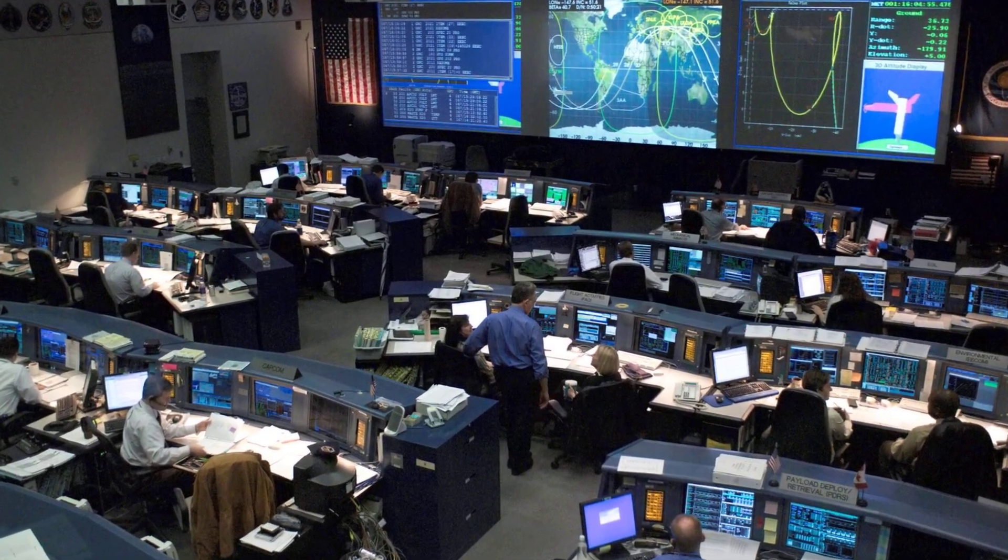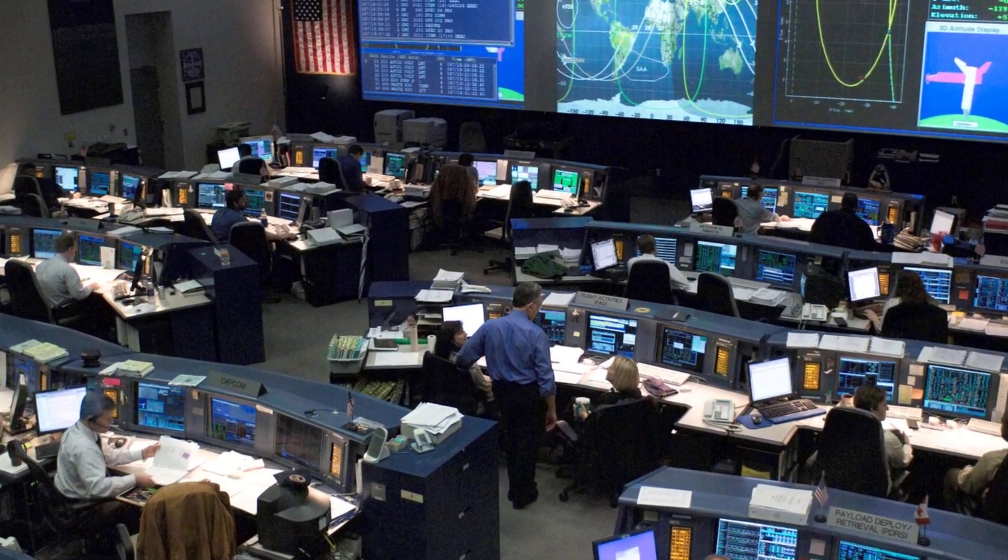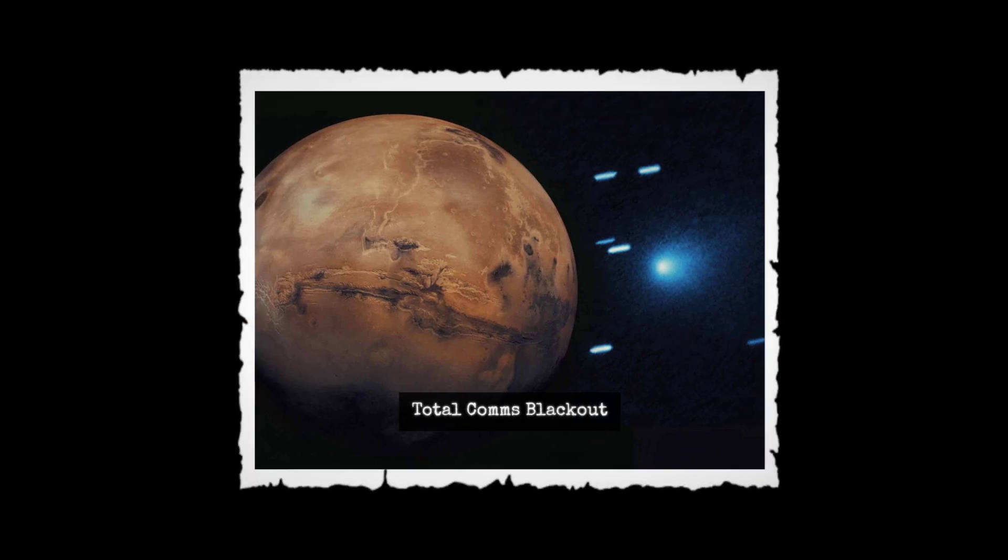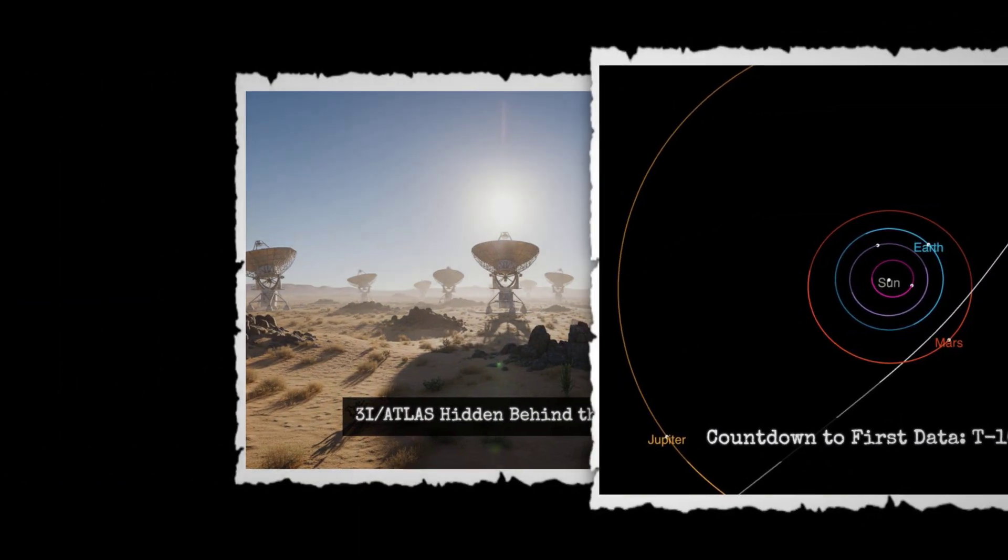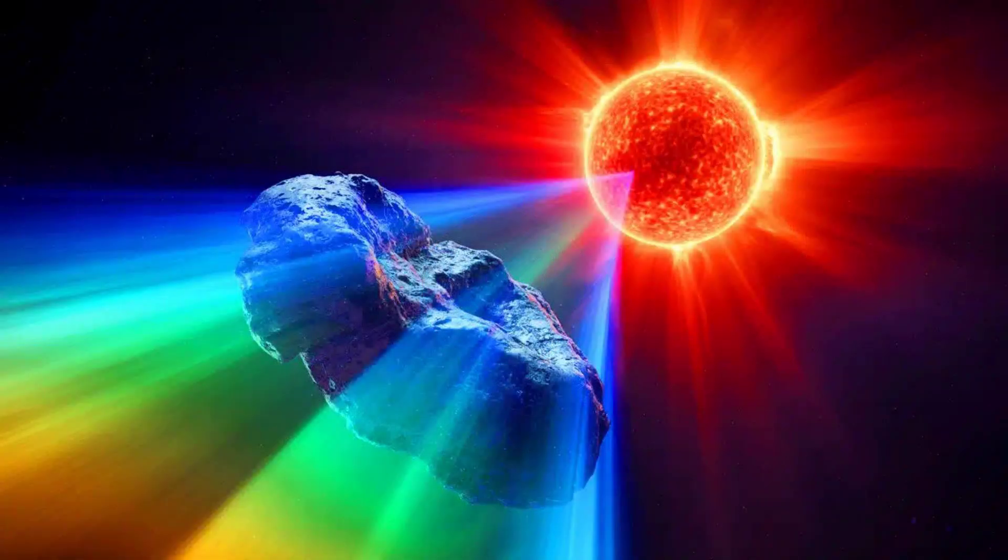Mars orbiters ration their signals, and all we're told is it's for spacecraft safety. For 10 days, no one on Earth knows what this object will do. Outbursts, fragmentation, even the sudden end of its journey could pass unseen.